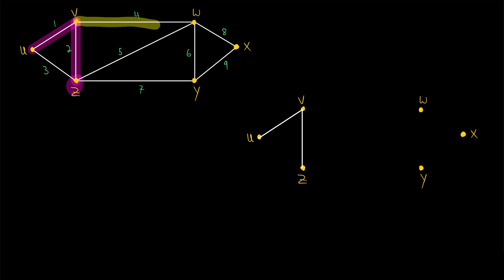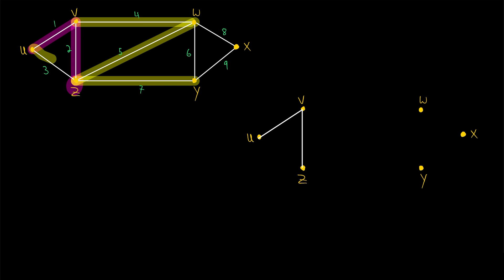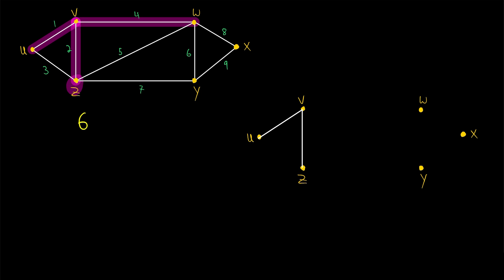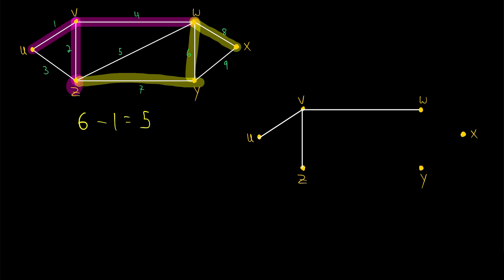We repeat step 3 again. We consider all edges sharing exactly one vertex with the edges already selected — those three edges there. We can't consider the edge that shares a vertex with two edges already selected, as including it would create a cycle. Among the three eligible edges, the minimum weight is 4, joining V and W. The order of our graph is 6, so we need 6 minus 1 or 5 edges. We've selected 3 so far, leaving 2 more. Next, the minimum weight eligible edge has weight 6 joining W and Y. Then the only two possible edges are compared, and the minimum weight is 8 joining W and X.